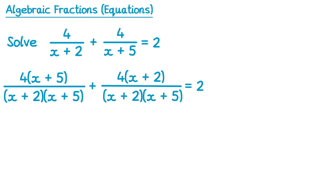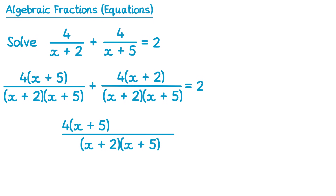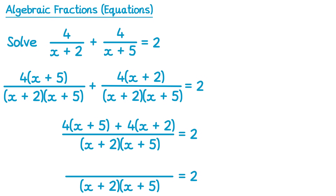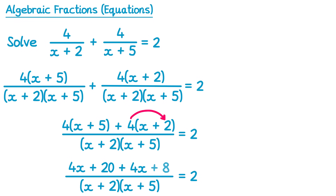Now that we have this common denominator, we can write them as one big fraction all over x plus 2, x plus 5. So on the numerators we have 4 lots of x plus 5, then a plus sign, and then 4 lots of x plus 2. And the right hand side is still equals 2. We can now do some expanding and simplifying. Expanding out the numerator: we've got 4 times x which is 4x, 4 times 5 which is plus 20, 4 times x which is 4x again, and then 4 times 2, that's a positive 8.